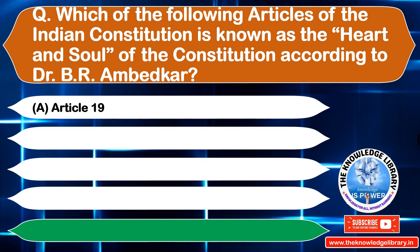The next question is: which fundamental right aims to protect the interest of minorities? Option A: Right to Freedom of Religion, Option B: Cultural and Educational Rights, Option C: Right to Equality, Option D: Right to Freedom. The correct answer is Option B: Cultural and Educational Rights.